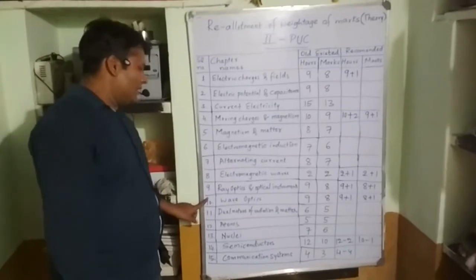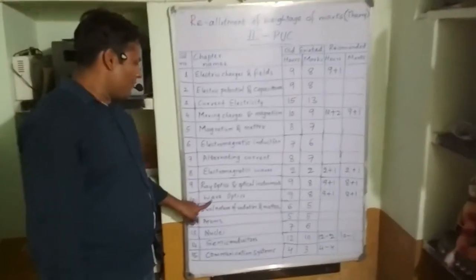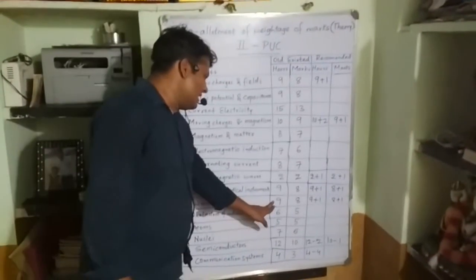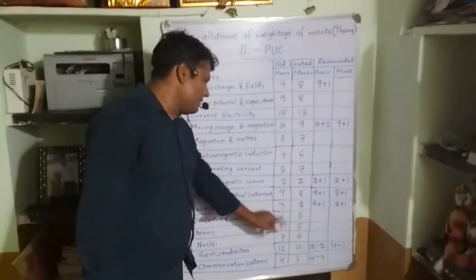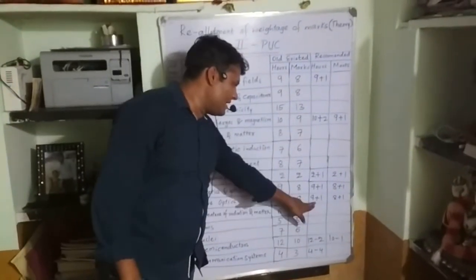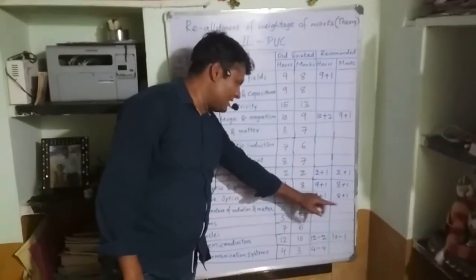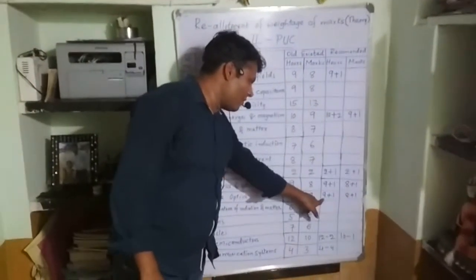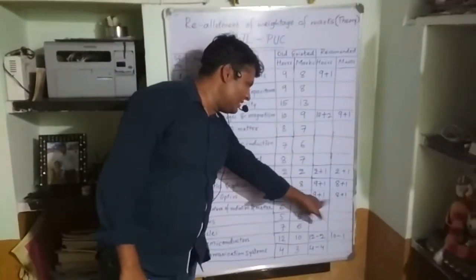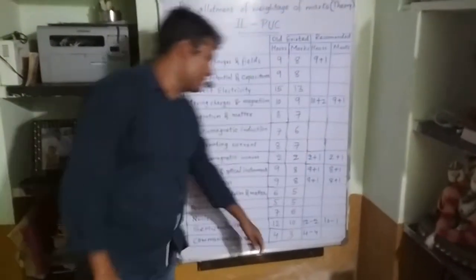For the tenth chapter, Wave Optics, teaching hours is nine and marks is eight. In the recommended section, an update has changed teaching hours from nine to nine plus one — that is ten — and the marks remain nine.